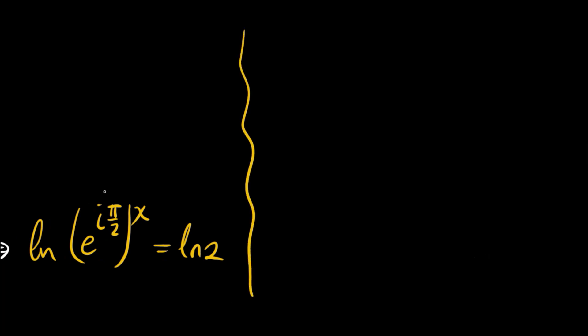From this, we can have this power of e, i times pi over 2 times x, to the front and times ln e. This is equal to ln 2. ln e is 1 by definition.